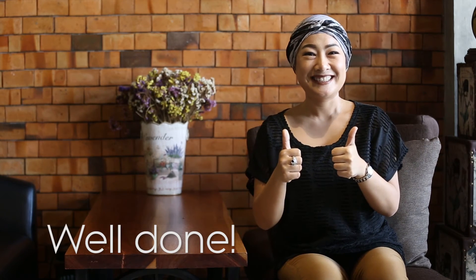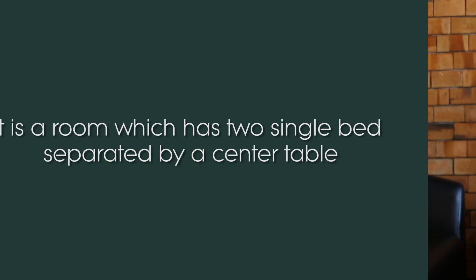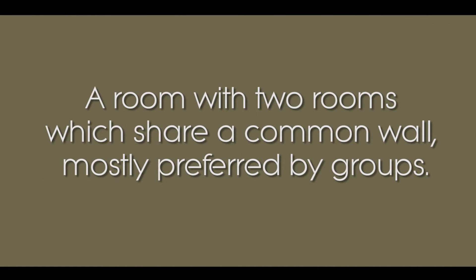If you answered correctly — Well done! Next: It is a room which has two single beds separated by a center table. The answer is: Twin Room. Congratulations if you got that right! Next: A room with two rooms which share a common wall, mostly preferred by groups. The answer is: Adjoining Room. Awesome!